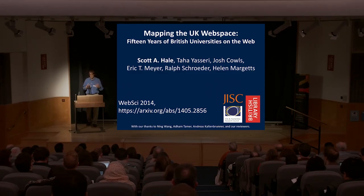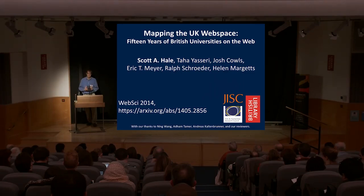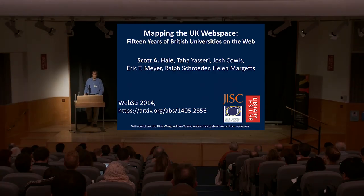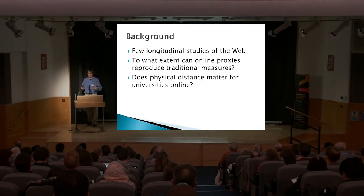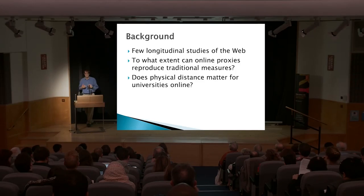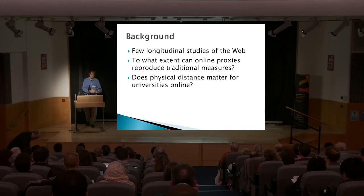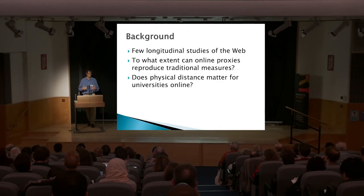We started on this a couple of years ago, and we were looking for something that we could analyse within the archive. We started looking at universities, because they were something wholly contained within the UK web space. We wanted to do this in a longitudinal way, because that's often missing in social science work — it's easy to crawl something and see the web as it is now, but what about putting that in context and seeing how it's changing over time?